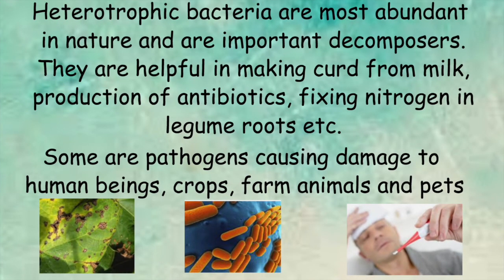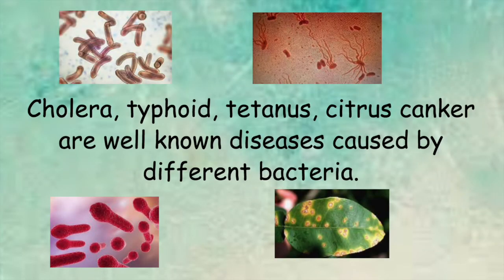Heterotrophic bacteria are most abundant in nature and are important decomposers. They are helpful in making curd from milk, production of antibiotics, fixing nitrogen in legume roots, etc. Some are pathogens, causing damage to human beings, crops, farm animals, and pets. Cholera, typhoid, tetanus, and citrus canker are well-known diseases caused by different bacteria.